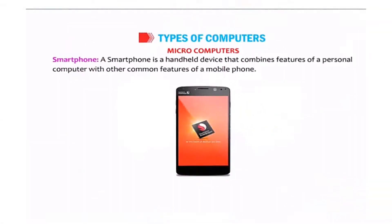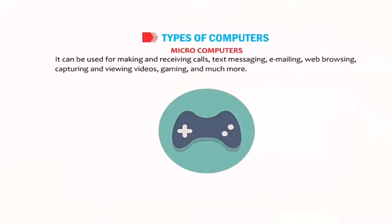A smartphone is a handheld device that combines the features of a personal computer with other common features of a mobile phone. It can be used for making and receiving calls, text messaging, emailing, web browsing, capturing and watching videos, gaming, and much more.